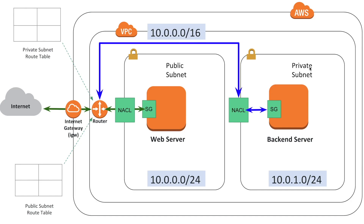Welcome back. Let's continue our discussion on migrating our on-premises architecture to AWS. In the previous video, we spun up two EC2 instances — one in a public subnet and another in a private subnet. The public subnet had internet access via an internet gateway attached to the web server router, but the private subnet had no connection to the internet. We then set up two security groups: one for the web server and another for the database server.